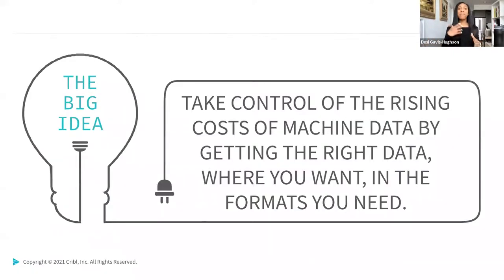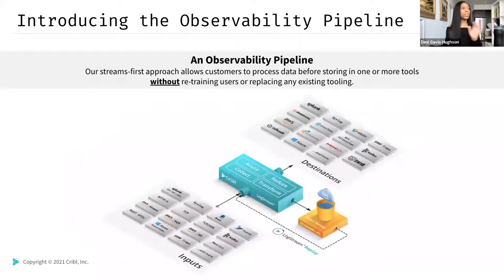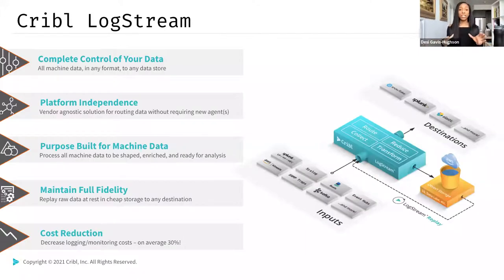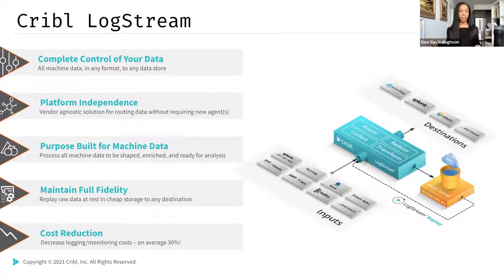How do you manage the trade-offs of analyzing everything you need, formatted for all the tools you use, without busting your budget? An observability pipeline solves all of these problems. Our product, Cribble Logstream, helps teams implement such a pipeline without replacing any existing tooling. Logstream enables customers to choose what data they want to keep, in what format and in what data store, while also providing the option to delay any or all of those decisions with a full-fidelity copy in low-cost storage.